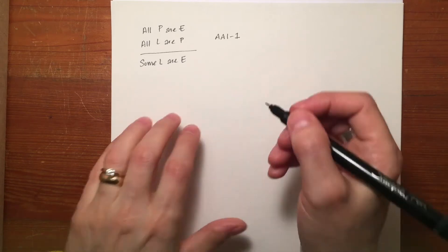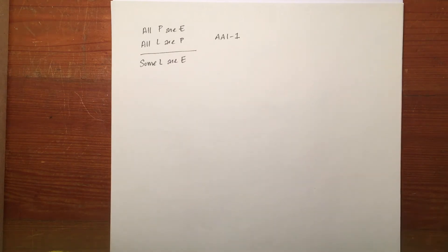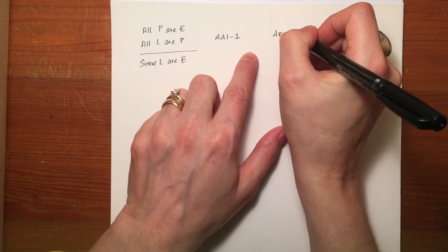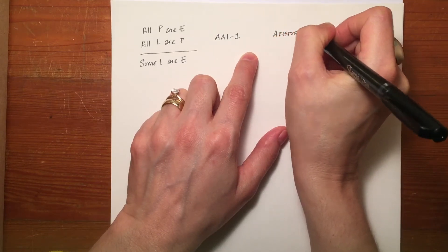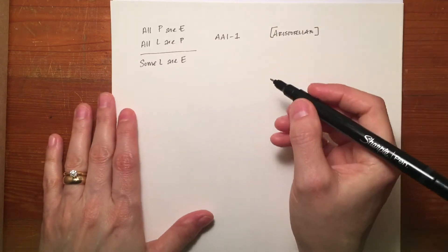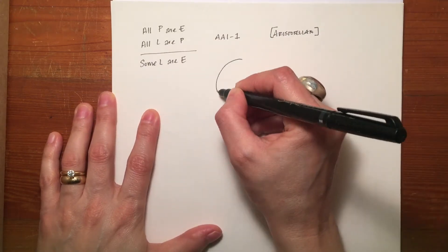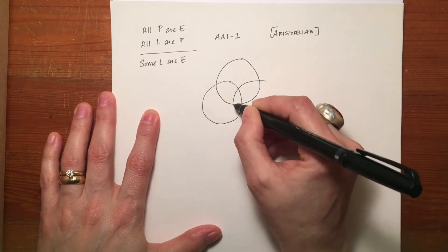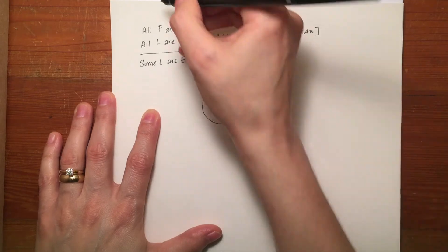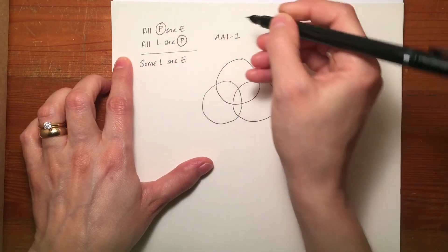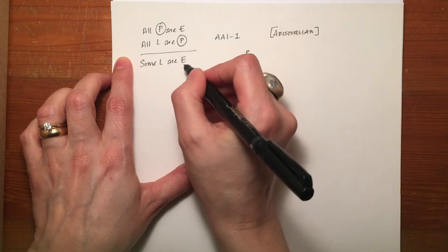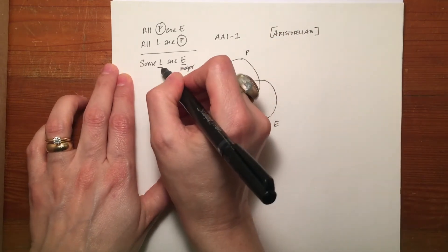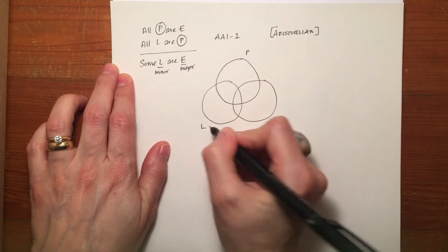If I were to use a Venn diagram, you need to know one extra thing about diagrams from the Aristotelian point of view. I'll draw my three circles. My middle term is P, my major term is E and will go here, and my minor term, L, will go here.